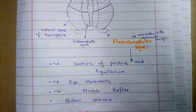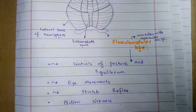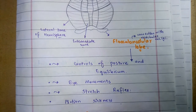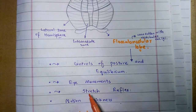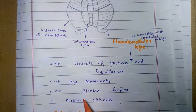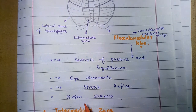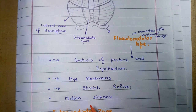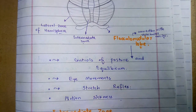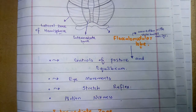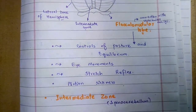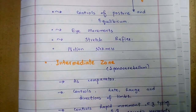Purkinje fibers are the flask-shaped cells present in the second layer of the cerebellar cortex. The flocculonodular lobe also controls eye movements, the stretch reflex, and muscle tone. It is also concerned with motion sickness, and damage to this zone leads to hypotonia.